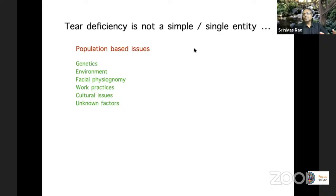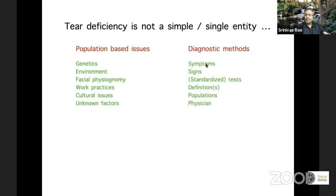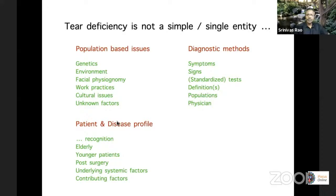If you think about tear deficiency itself, it's not a single or simple entity. There's a lot of genetics involved, environmental factors, spatial physiognomy — the Chinese have very tight palpebral fissures, while Caucasians have large eyes with a lot of ocular surface exposure. There are work practices involved — you could be a farmer working outdoors in heat and dust, or a computer professional sitting 12 hours in an air-conditioned room staring at a video display terminal. We still don't have very standardized diagnostic methods. The symptoms and signs often do not match, and the definition of dry eye itself constantly keeps changing as we understand more.